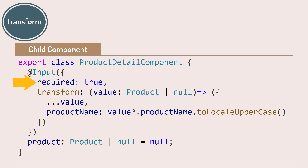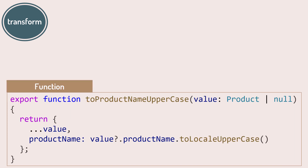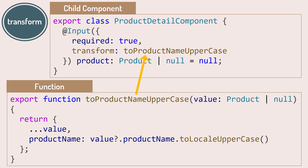In this example, we want to ensure the parent component provides the product data, so we set the required option to true. Then we set the transform option to a function that returns a product object. This function takes the passed-in product, uses the spread operator to make a copy of that product, and modifies the product name to uppercase. Use the transform option to perform any type of data transformation on the provided value before it's assigned to the input property. If you'd rather create a reusable transform function, you can define it as an exported JavaScript function and set the transform property to the name of that function.